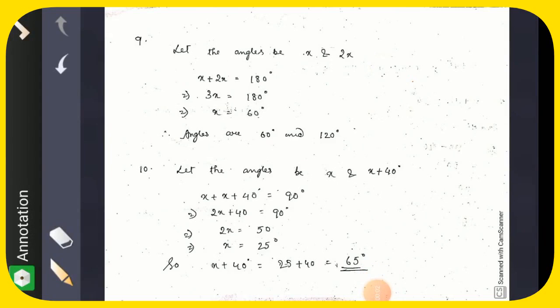Welcome students, today we are going to start number 9 of exercise touching point one. It is given that an angle is double its supplement. Let one angle be x, the other angle is twice it. Now we have to find the angle. Supplements means 180, so x plus 2x equals 180. 3x equals 180, x equals 60. So the two angles are 60 and 120.